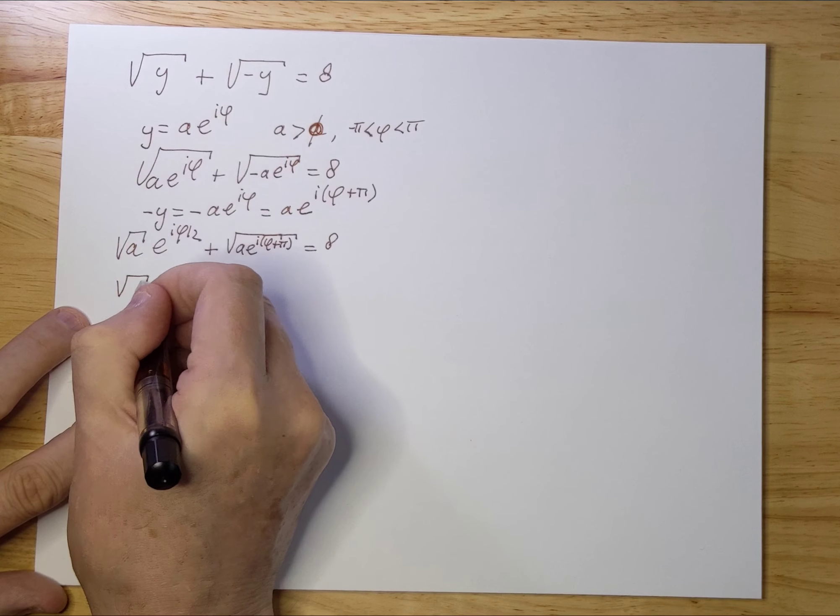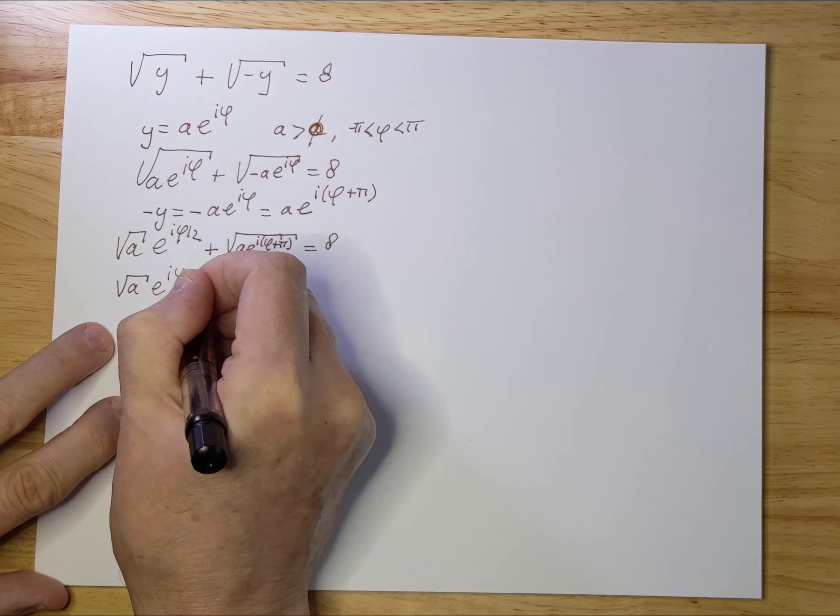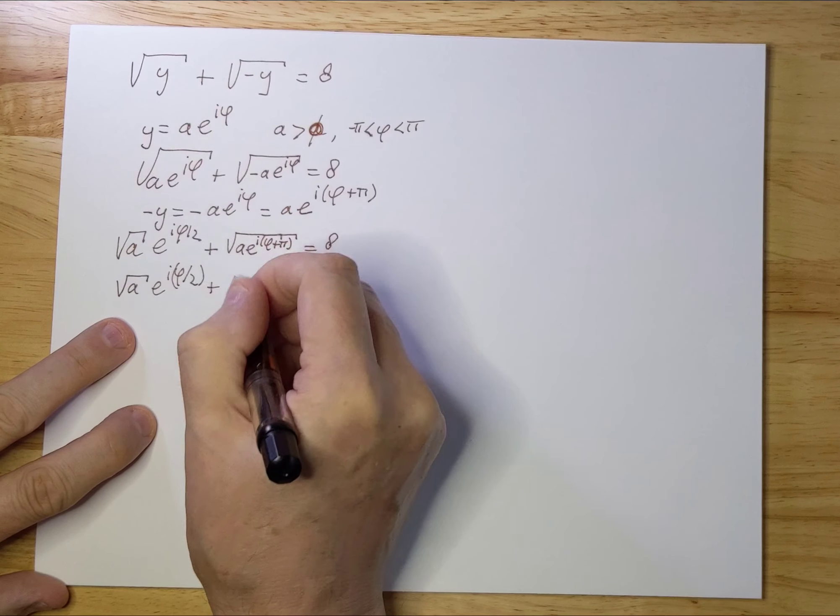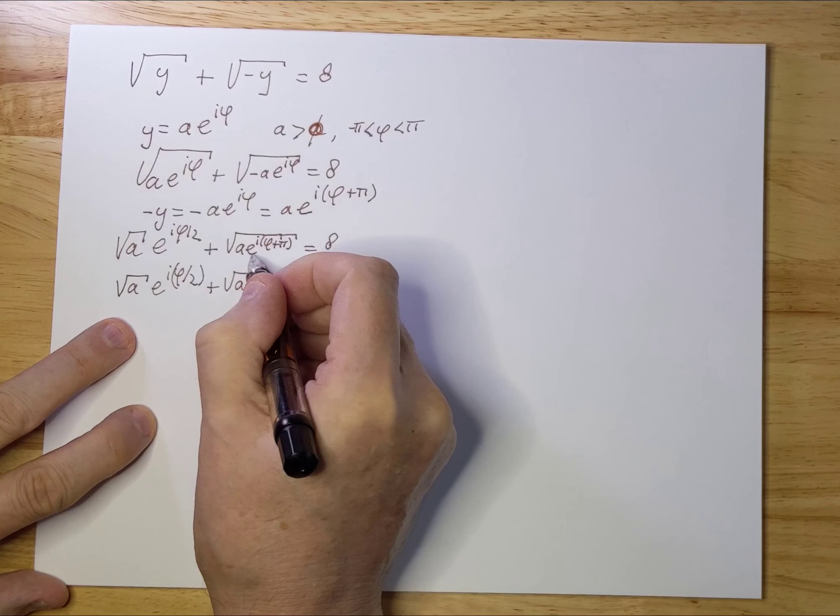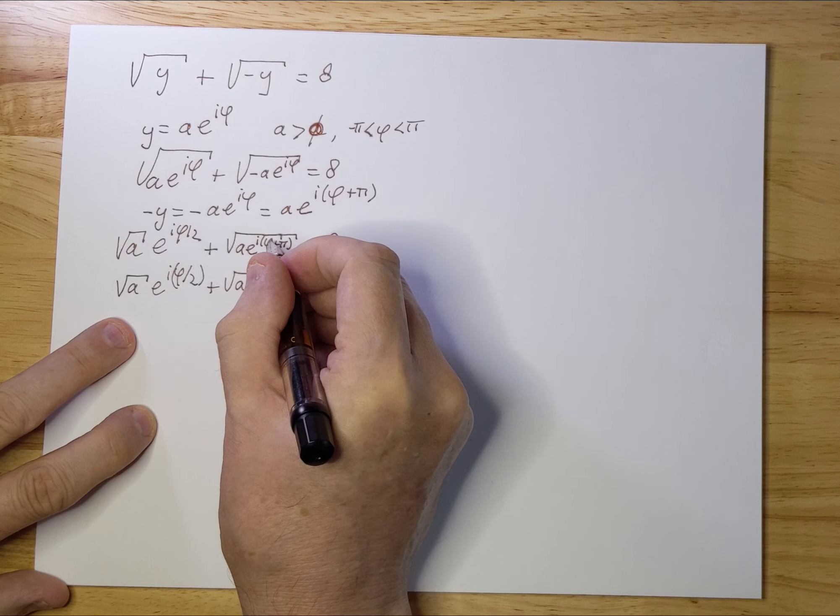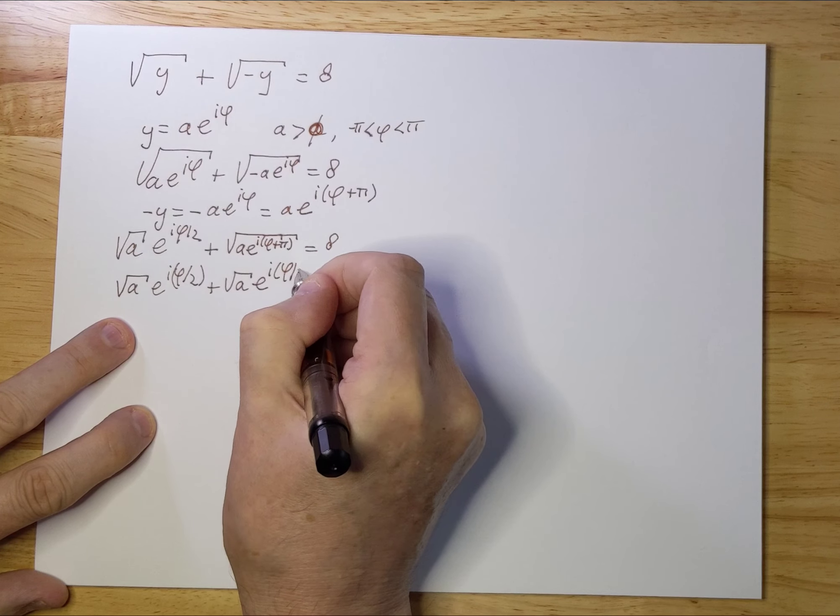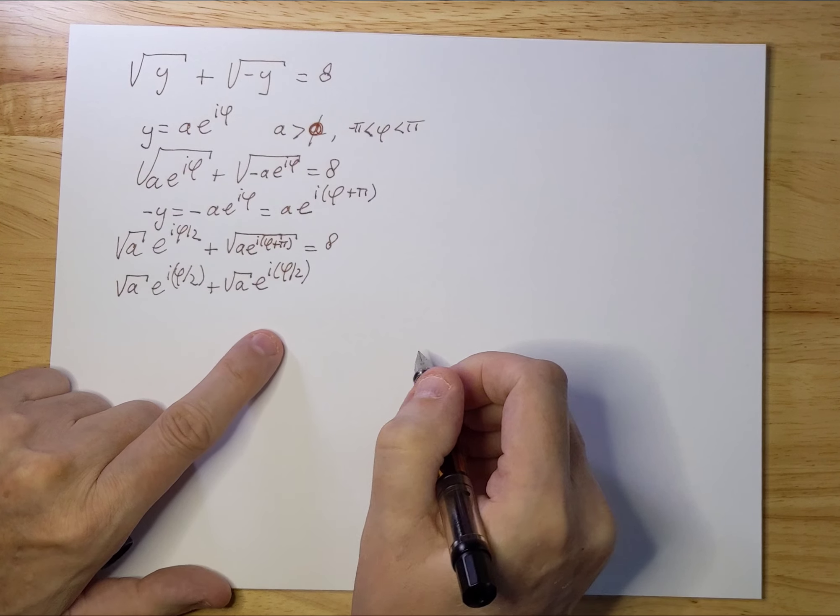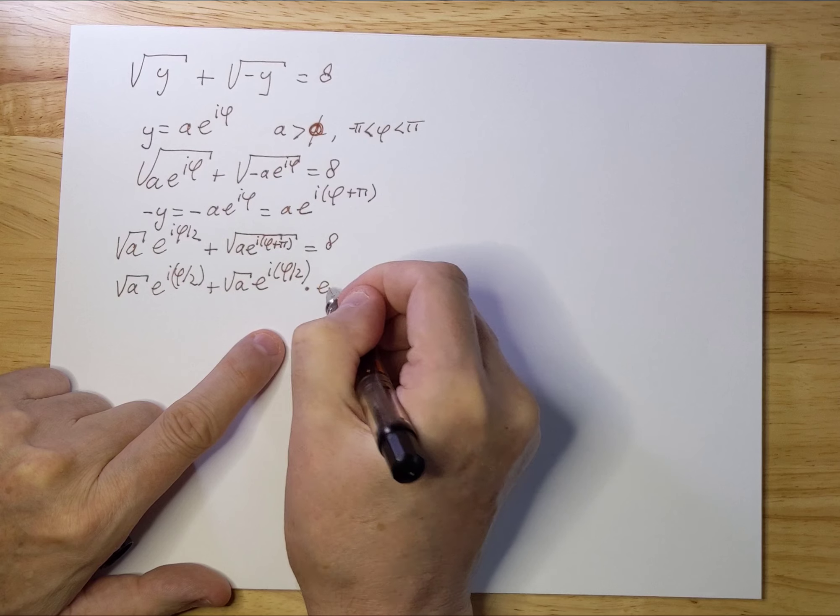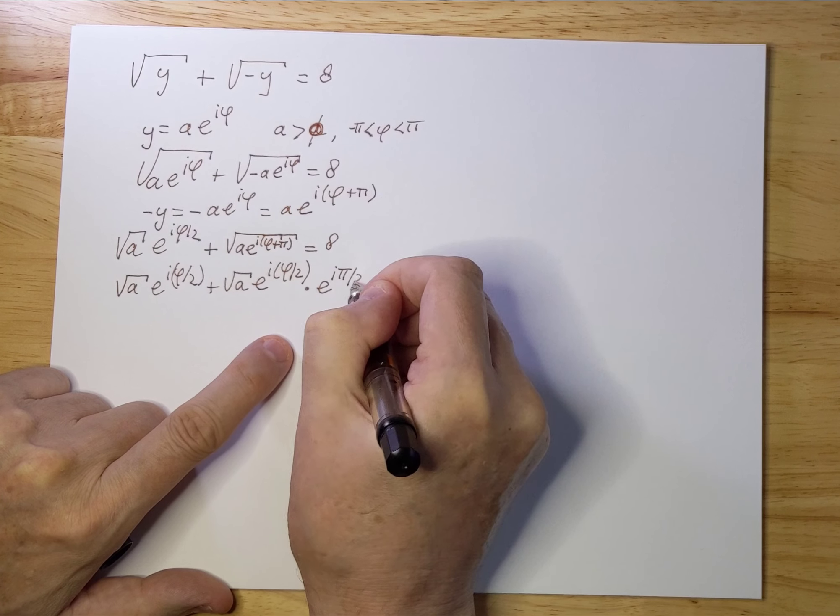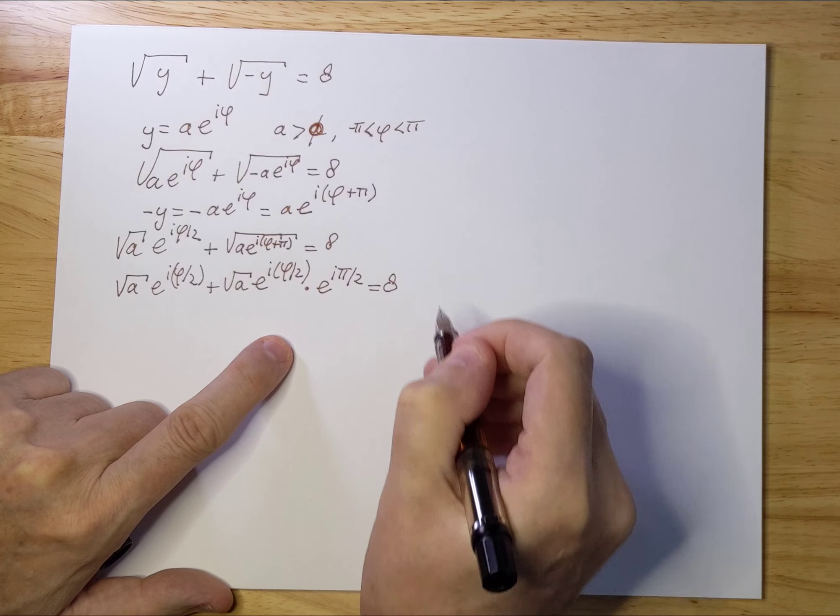Let's take out the √a here also. Let's take out the e^(i(φ/2)). So you get another term like that, e^(i(φ/2)) and e^(i(π/2)), and that together equals 8.